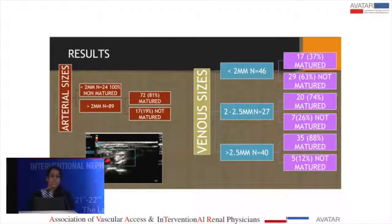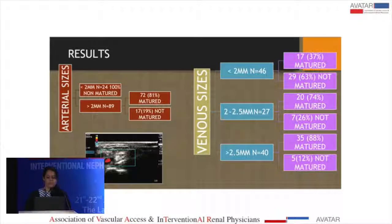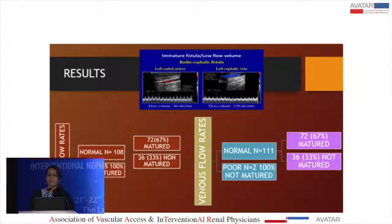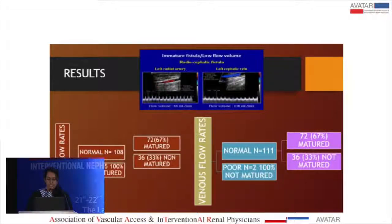Coming to the flow rates — preoperatively, 5 fistulas had a poor arterial flow rate and all of them failed to mature. In the normal arterial flow rate group, 72 fistulas matured and 36 did not mature; this was statistically significant. In the venous flow rates, only 2 fistulas had poor blood flow preoperatively and both did not mature, but these values were not statistically significant.